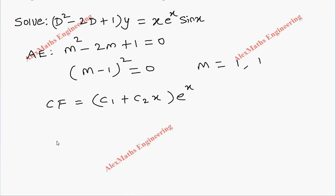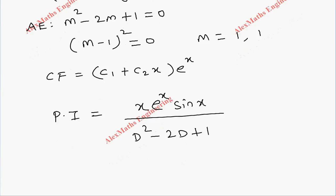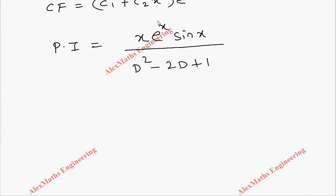For the particular integral, we write the right-hand side function x·e^x·sin(x) divided by (D² - 2D + 1). We first focus on the exponential function. Since the value of a is 1, every D is replaced by (D + 1), giving e^x·sin(x)·x divided by the modified denominator.